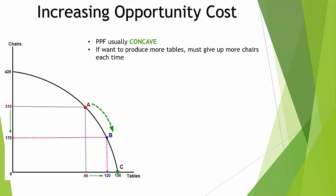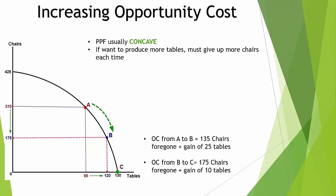The PPF curve is concave — it bows outwards — and this demonstrates increasing opportunity cost. If we keep increasing the number of tables produced, each time we have to give up a greater quantity of chairs. From A to B we gave up 135 chairs to gain 25 tables; moving from B to C we give up 175 chairs to gain only 10 extra tables. This increasing opportunity cost is reflected in the concave shape.